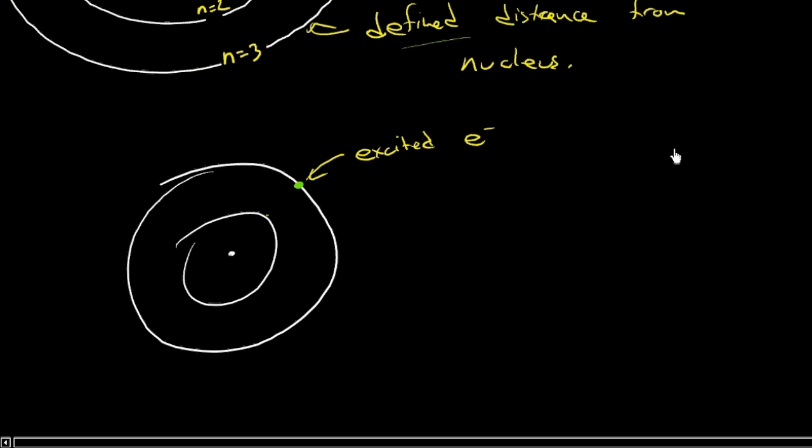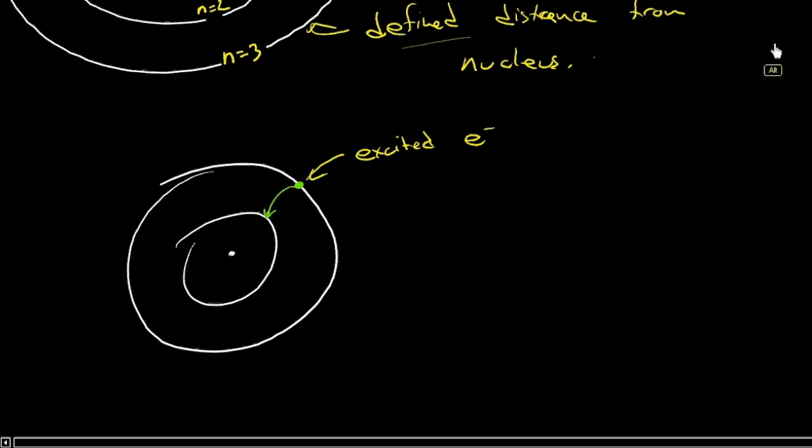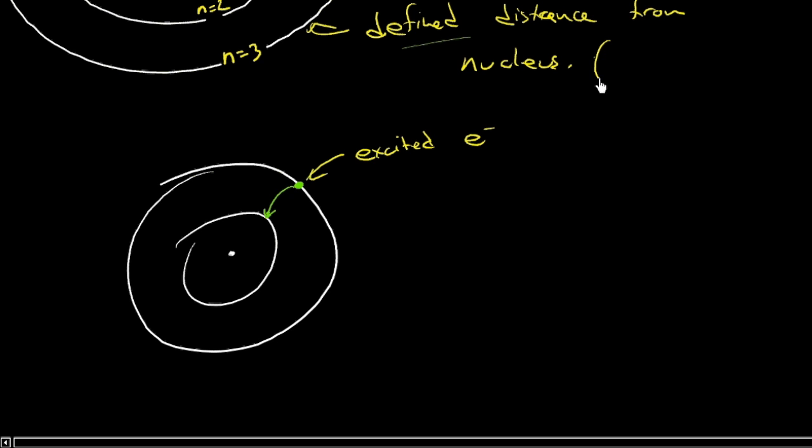It's going to want to drop down to achieve a lower energy. And so what happens is it drops back down, and it's only this specific value, right? We say these defined distances. What that tells us is that another way of saying that is that the energy is quantized. Quantized. Quantized means that it can only take on specific values.